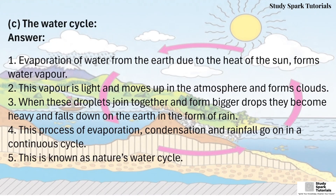Question C: The water cycle. Answer: Evaporation of water from the earth due to the heat of the sun forms water vapour. This vapour is light and moves up in the atmosphere to form clouds. When drops join together and form bigger drops, they become heavy and fall down on the earth as rain. This continuous process of evaporation, condensation, and rainfall is known as nature's water cycle.